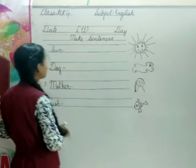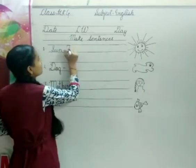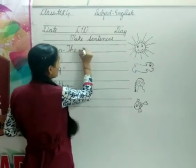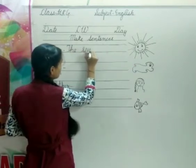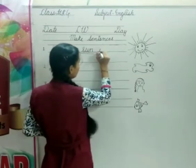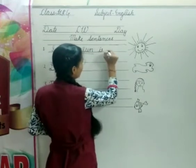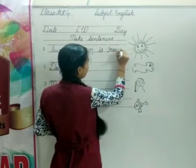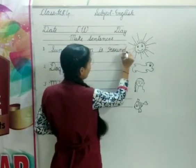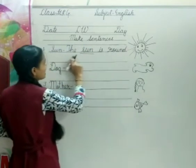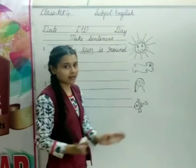Let's make sentence. My sentence is the Sun. The Sun is round. The Sun is round. Okay, Sun how is it? Sun? Round is. Okay, next.